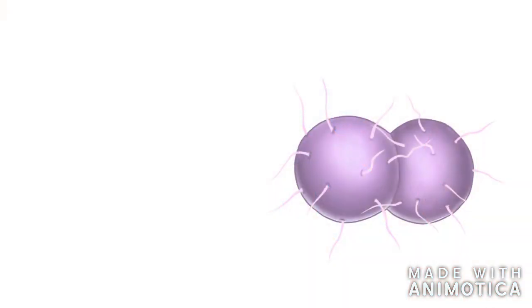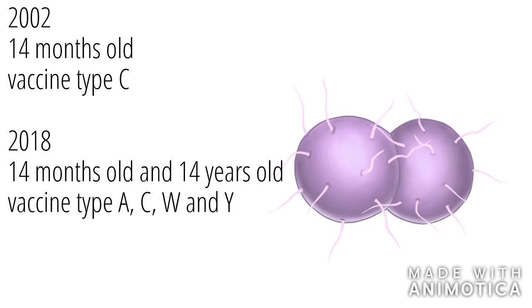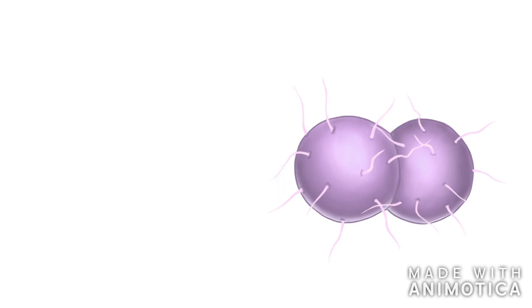In the Netherlands, people are vaccinated at 14 months old and 14 years old. There are different types of Neisseria. Since 2002, babies are vaccinated from meningococcal type C. However, since 2018, a new vaccine for meningococcal type A, C, W, and Y is given to babies and teenagers of 14 years old.